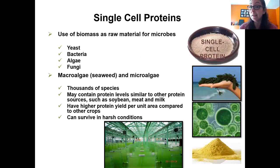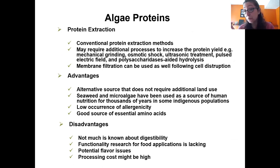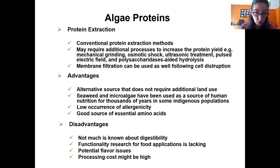Algae is another protein source — easy to grow, requires less land and space, and can survive harsh conditions. The challenge is extracting the protein: we need to break the cell walls using additional processes, then potentially use alkaline extractions or membrane filtration. Advantages include low land use, historical use as human food, low allergenicity, and being a good source of essential amino acids. Disadvantages include limited knowledge of digestibility and functionality, flavor issues, and potentially high processing costs for cell wall disruption.